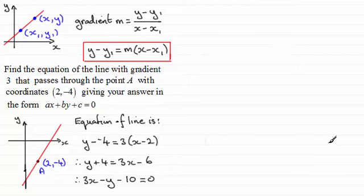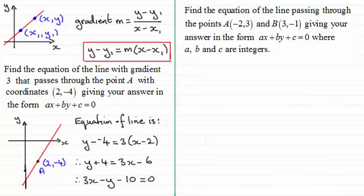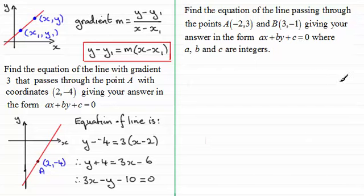Let's take another example — a common one illustrating another point you're likely to encounter. We're asked to find the equation of the line passing through point a with coordinates (-2, 3) and point b with coordinates (3, -1), giving your answer in the form ax plus by plus c equals 0, where a, b, and c are integers. Again, I'd like to draw a sketch so we can get a feel for the problem.